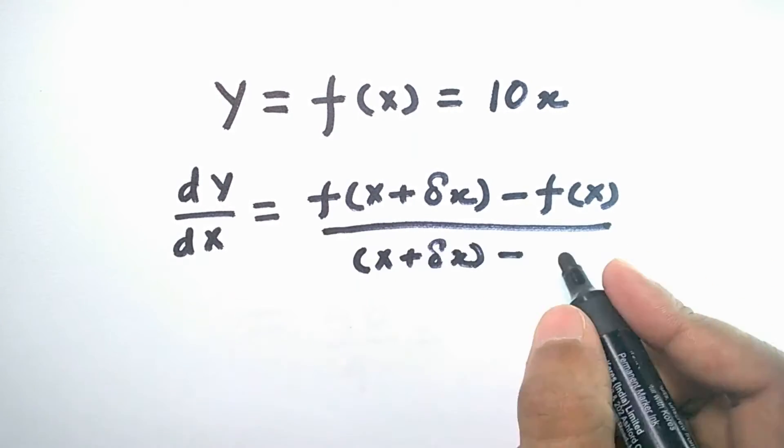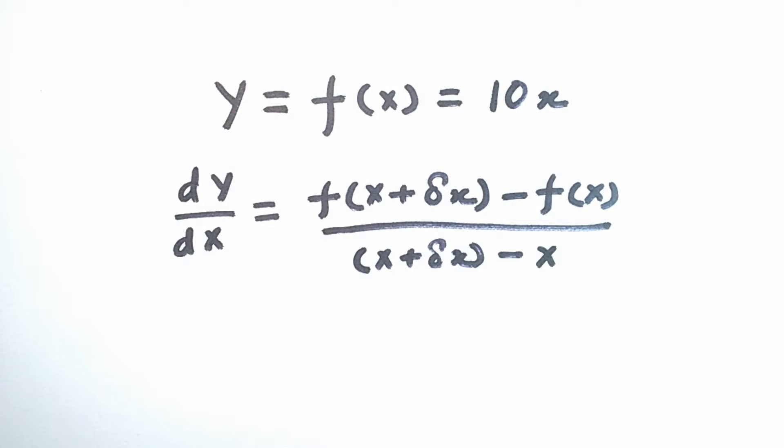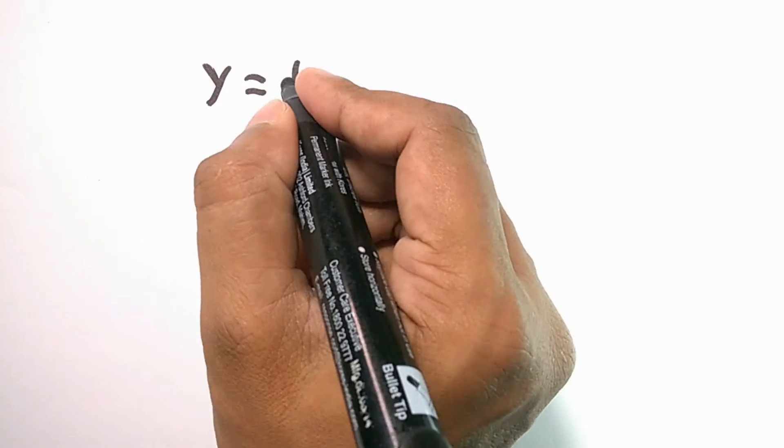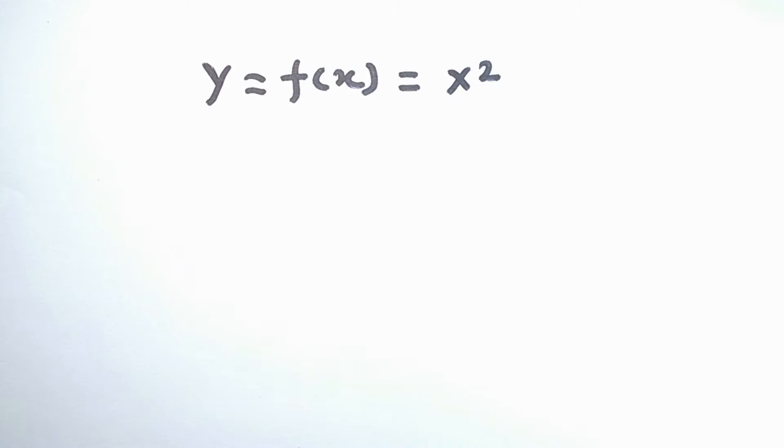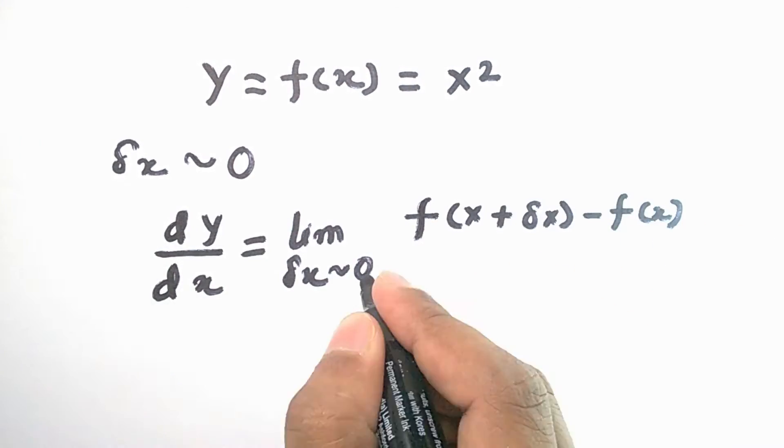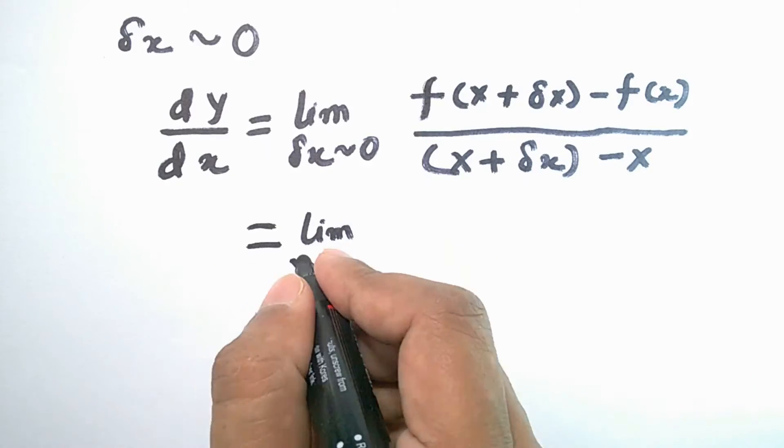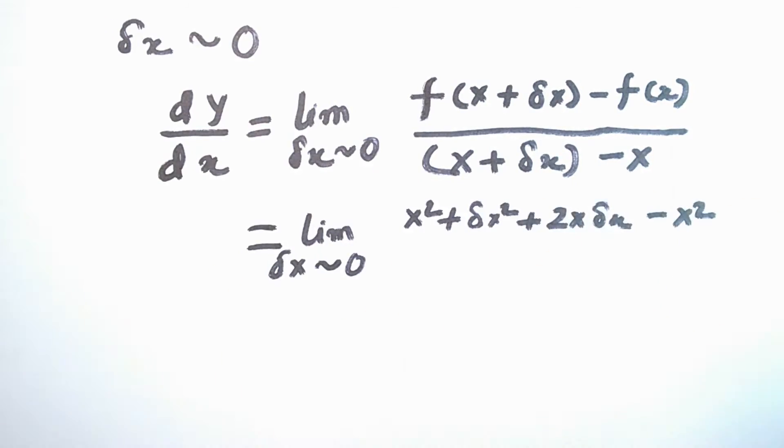So, the rate at which the value of y is changing with x can be written as follows, where del x is the change in the value of x. For better understanding, we can try doing this for a function which is equal to x squared, for a change in the variable which is so small that it is almost equal to 0.